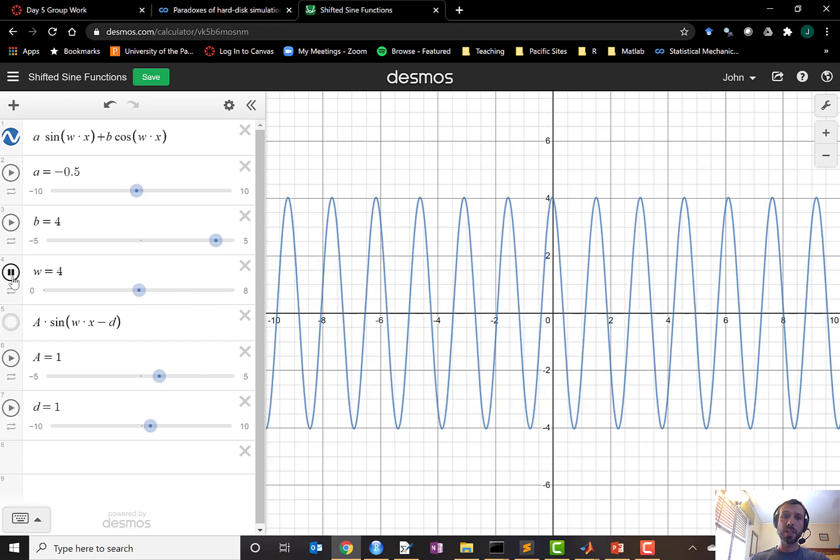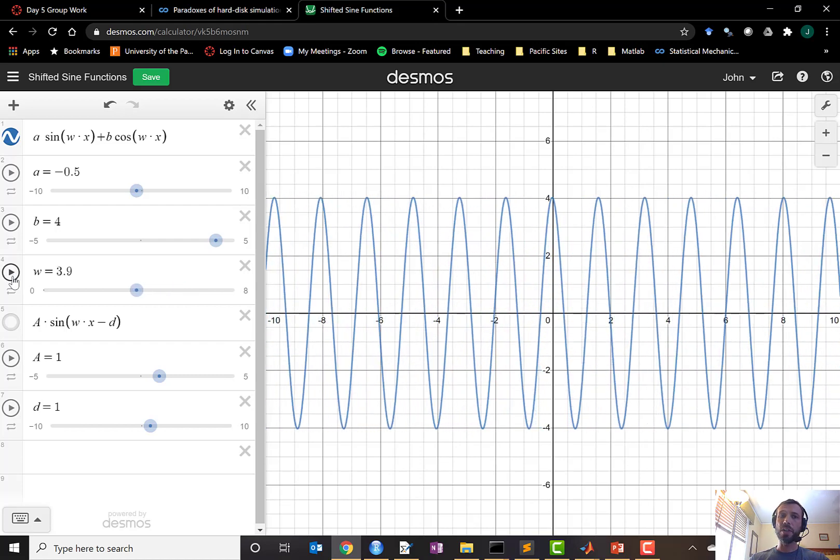But if you're watching carefully, you'll also notice that what happened as we controlled little a and little b was that the waves got out of phase with each other.